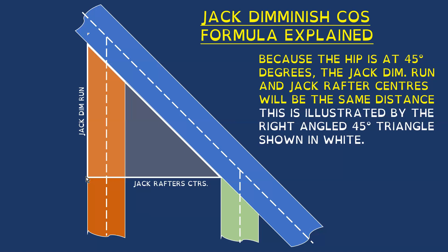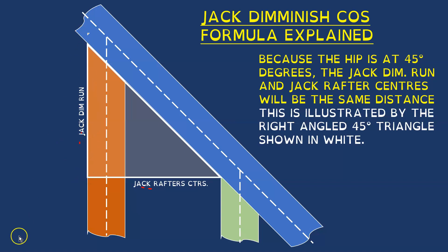So if it was 400 millimeters or 16 inches, depending on whether you're going metric or imperial, you'll also notice that because the hip or valley is at 45 degrees to the jacks, this distance on the other leg of that right angle triangle is the same as the centers. So if the distance along here is 400 millimeters, then so will this — and this represents the jack diminish run.